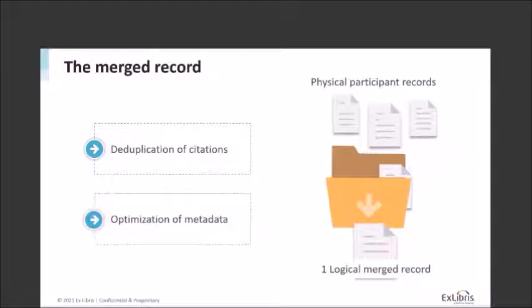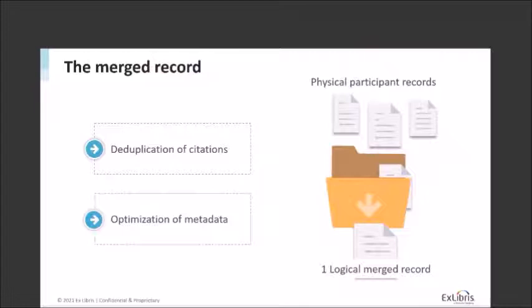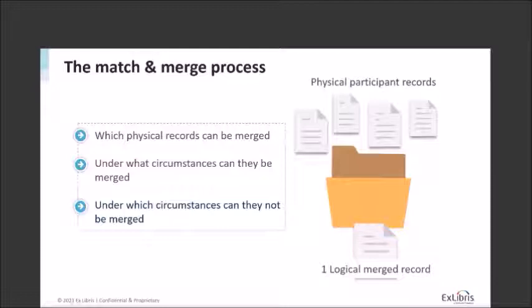The merged record is a deduplication process to show one record to users — a kind of super record that provides the best available metadata for an item. The input for a logical merged record are physical records called participants, which can come from many different providers indexing the same item, sometimes from different collections from the same provider. The merged record is based on rules and logic — that's why it's called the logical record. All physical participant records are indexed, but the user only sees records they have rights for — those freely available or from a subscribed database.